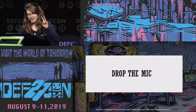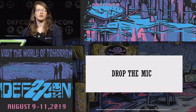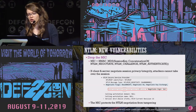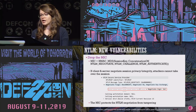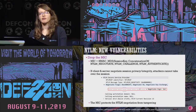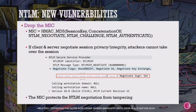The second vulnerability is Drop the MIC — the message integrity code. As Yaron mentioned, the MIC is calculated by applying HMAC-MD5 using the session signing key on all three NTLM messages. Its goal is to ensure attackers didn't tamper with any NTLM messages.